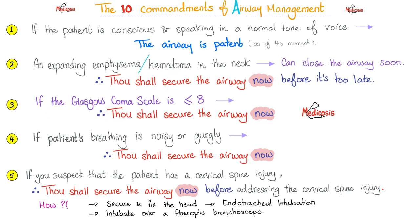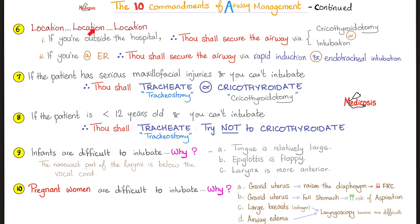Rule number three: if the Glasgow Coma Scale is less than eight, you shall secure the airway. If the patient's breathing is noisy or gurgling, intervene right away — secure the airway now. If you suspect cervical spine injury or atlanto-axial subluxation, secure the airway before addressing the cervical spine injury. You have two options: fix the head and avoid hyperextension, then endotracheally intubate — that's for the pros — or use intubation over a fiberoptic bronchoscope. But if this is an emergency, fiberoptic is not an option because it takes a lot of time.